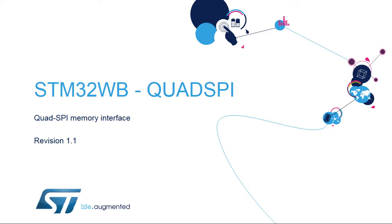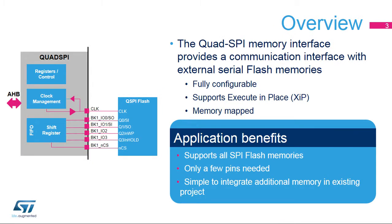Hello, and welcome to this presentation of the STM32 Quad SPI Memory Interface. It covers the main features of this interface, which is widely used for connecting external memories to the microcontroller. The Quad SPI Memory Interface, integrated inside STM32 products, provides a communication interface allowing the microcontroller to communicate with external SPI and Quad SPI memories.